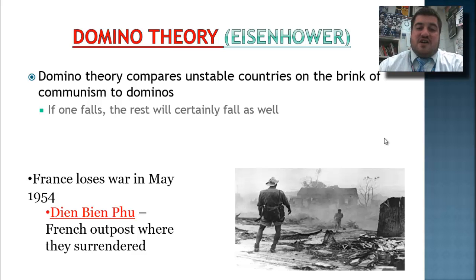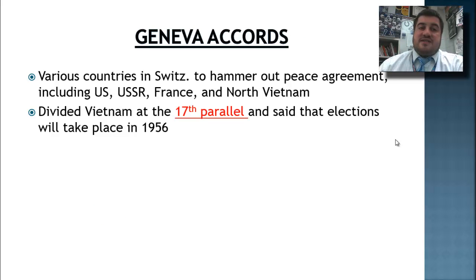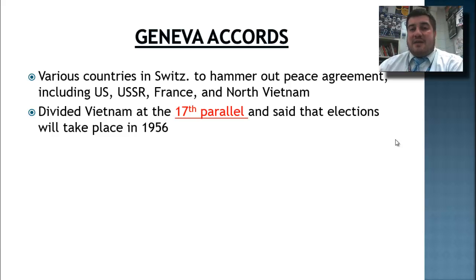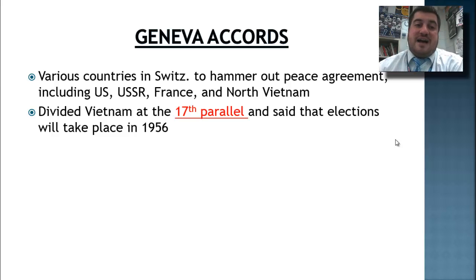France has a hard time with this war, just as we'll have a hard time with it, because they lose and give up in 1954 at the Battle of Dien Bien Phu — the French outpost where they finally surrendered. So we, along with the Soviet Union, France, and North Vietnam, all meet in Geneva, Switzerland to hammer out a peace agreement. We decide that Vietnam will be divided at the 17th parallel, and elections will take place in 1956. The North will be communist; the South will not be communist.